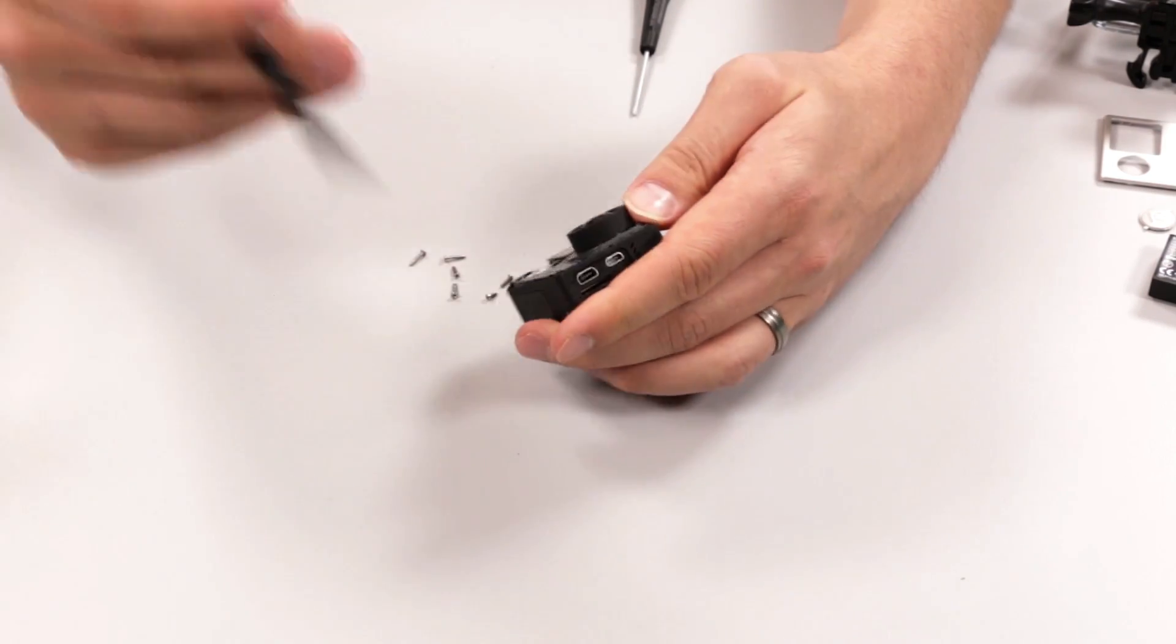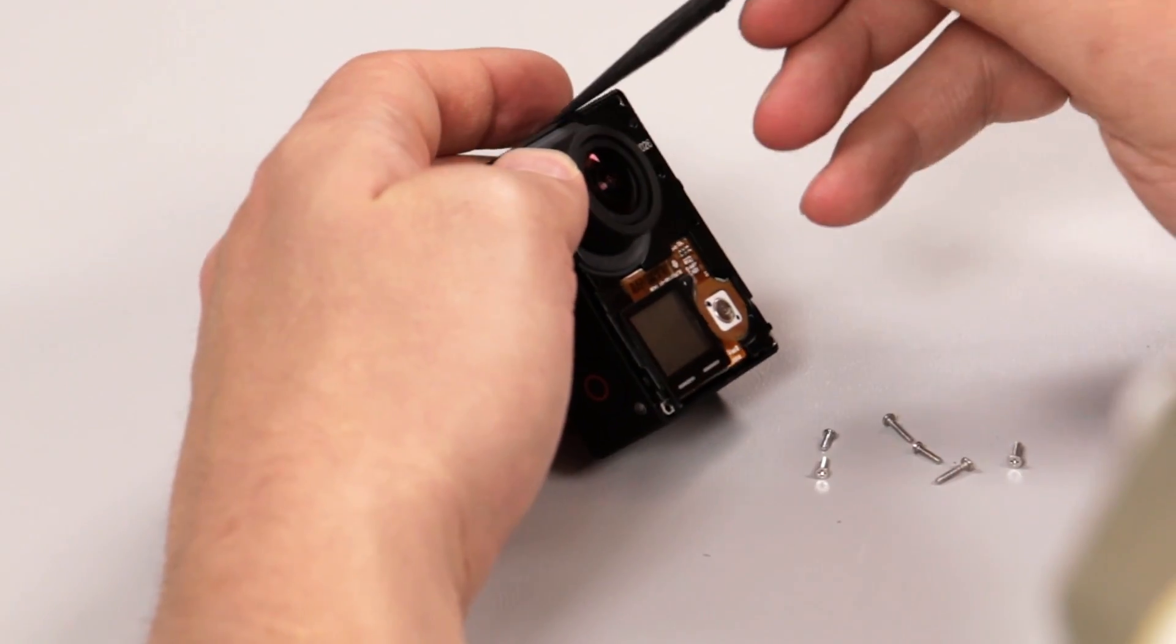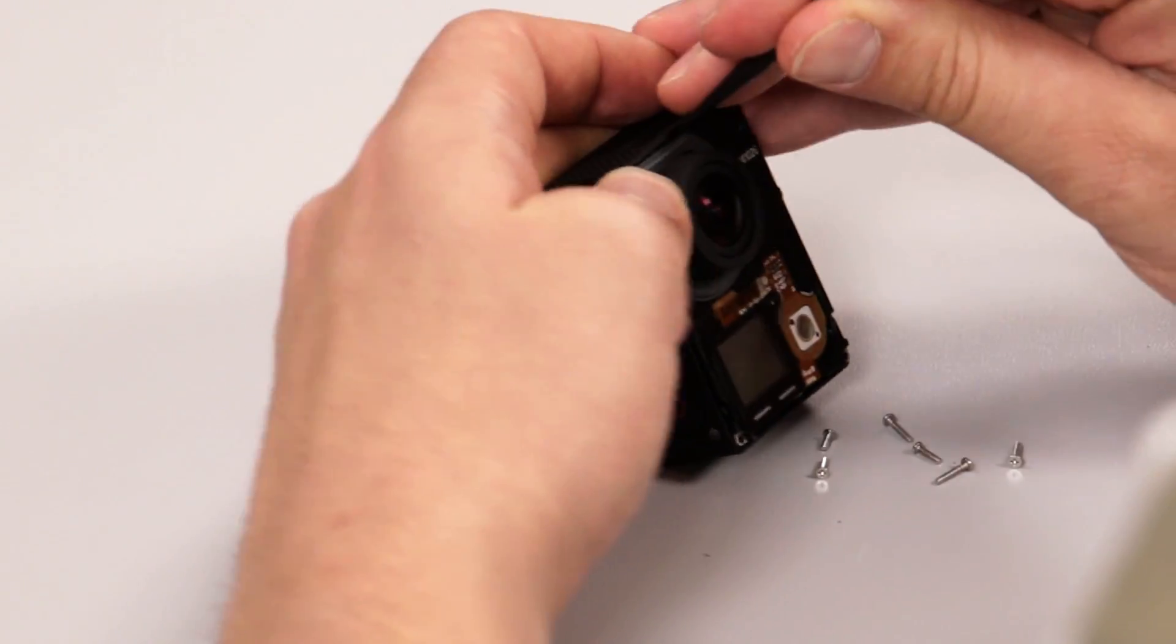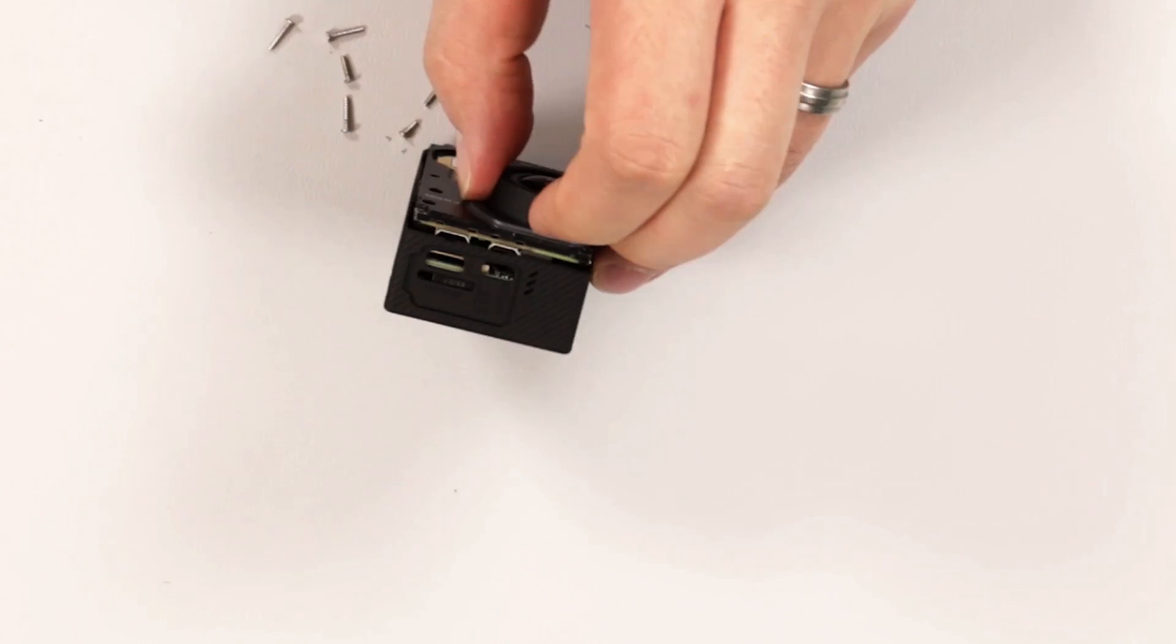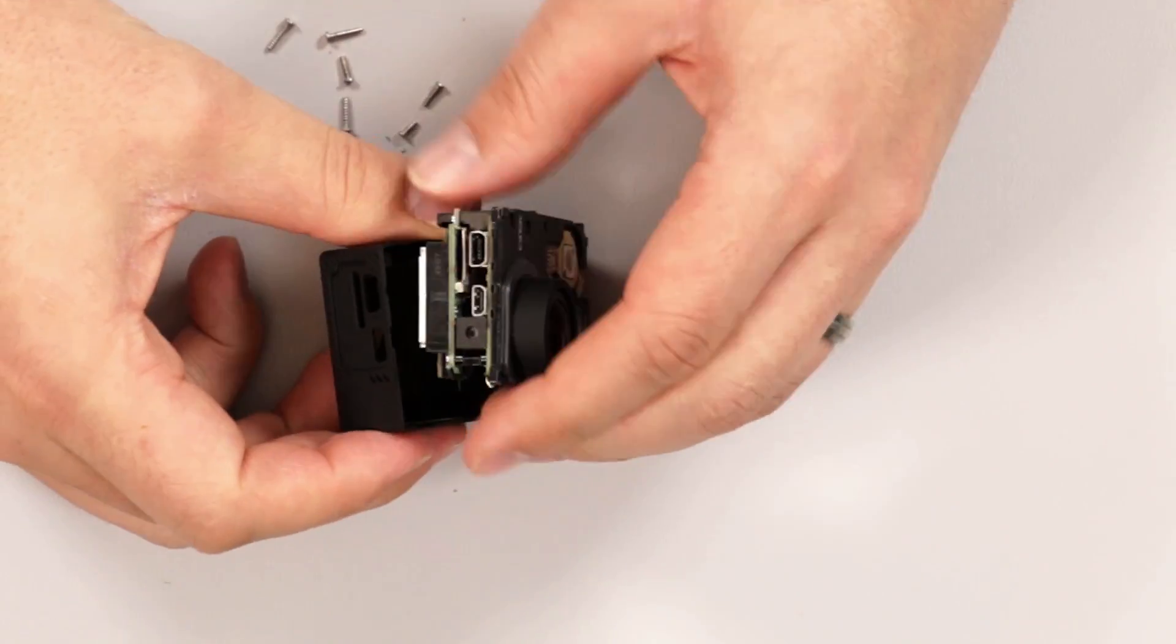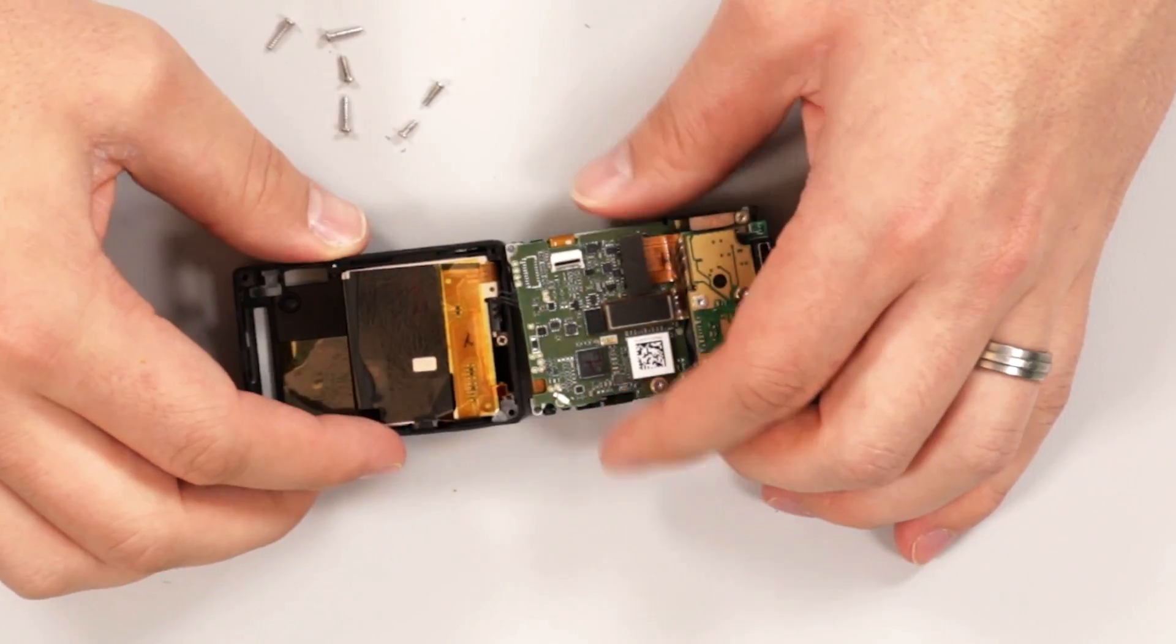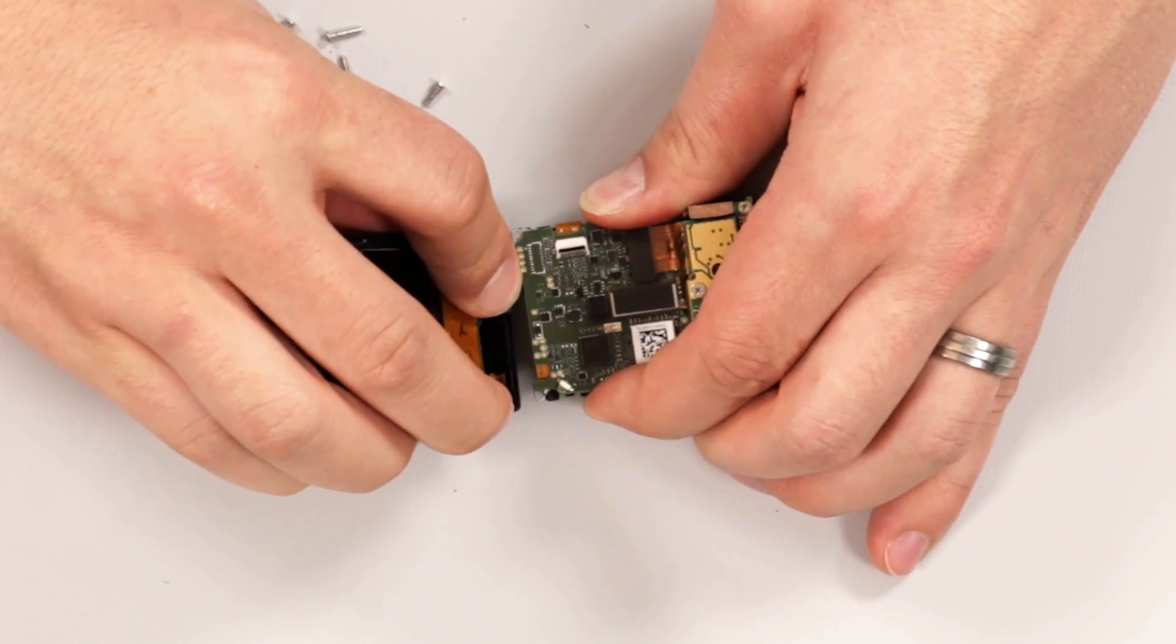To get the camera out of the body, pry the body away at the ports. Once the camera is out, there are two cables that need disconnected.